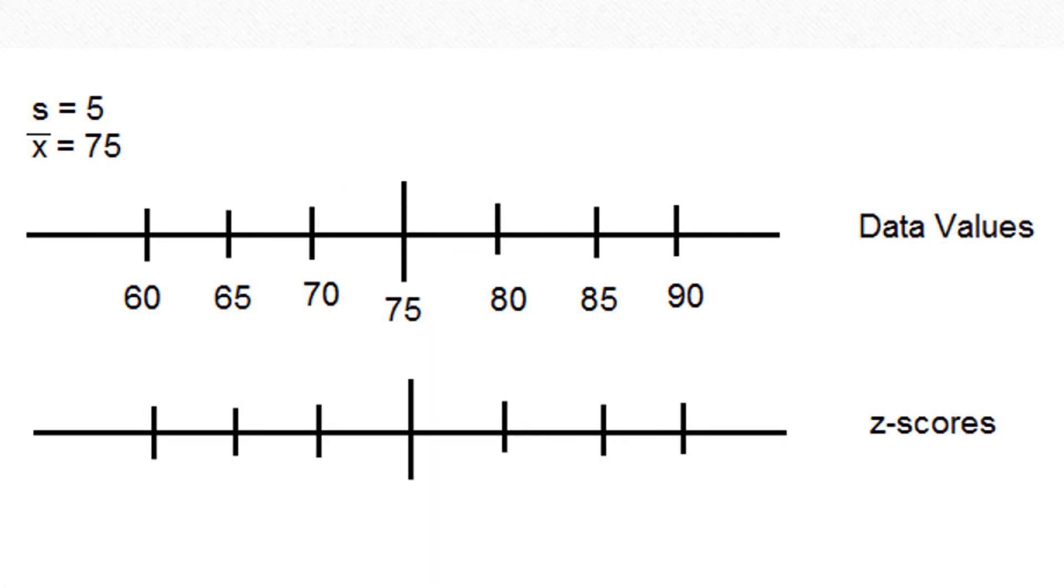So I'm going to mark off on a corresponding number line the Z scores for the data. Since 80 is one standard deviation above 75, it has a Z score of 1. Since 85 is 10 units, which is 2 times 5 or 2 standard deviations above 75, this is going to have a Z score of 2. Similarly, 90 has a Z score of 3.